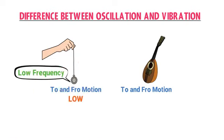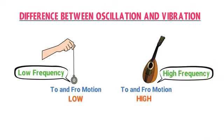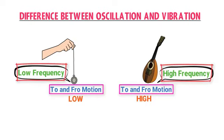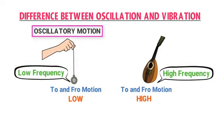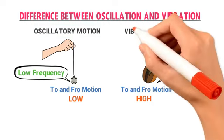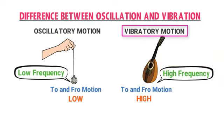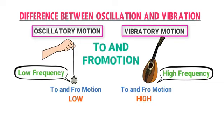The frequency of the pendulum's to and fro motion is low, so we call it oscillatory motion or oscillation. The frequency of the guitar string's to and fro motion is very high compared to the pendulum, so we call it vibratory motion or vibration. Both terms depend purely on the rate of frequency — vibration and oscillation are simply two different terms for to and fro motion depending on frequency.